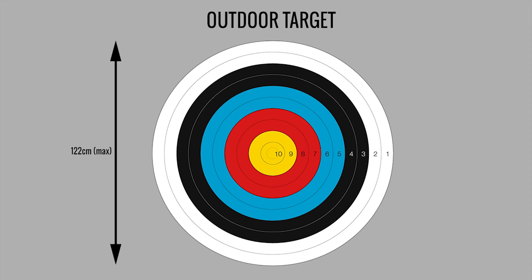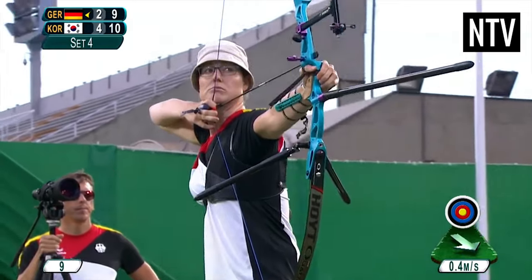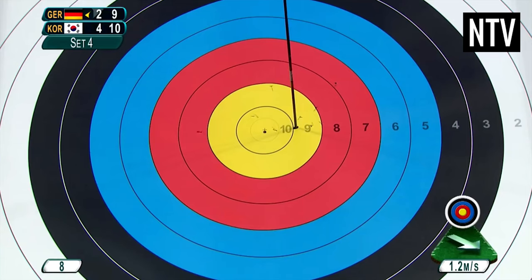The target is segregated into colours and bands. The closer to the middle of the target, the higher the number of points are scored.